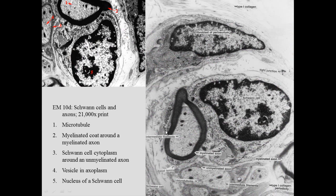If we look at a peripheral nerve at the electron microscopic level, you can see the Schwann cell, the myelin sheath, and the axon inside. One Schwann cell surrounds one axon. In contrast, another Schwann cell has wrapped around — not in a myelin sheath, but within its pocket — several axons. If it's unmyelinated, it will encase several axons, but if it's myelinated, it only myelinates one axon.